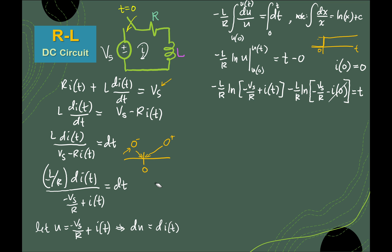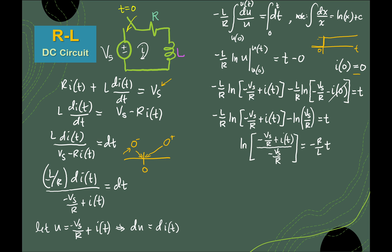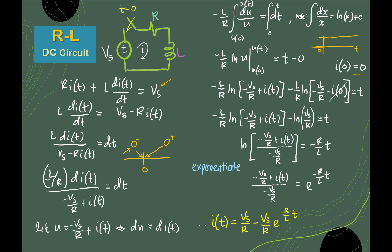Going back to basic algebra, i(0) equals zero, which makes the equation simpler. Removing i(0) and combining the two natural logarithms gives a division inside the ln. Putting the coefficient negative L/R to the other side gives negative R/L. Exponentiating both sides — which cancels the ln — leaves the term inside the ln, and the other side becomes e to the power of negative R/L times t. You then have the final expression for the current i(t), and that is the behavior of current in your DC RL circuit.